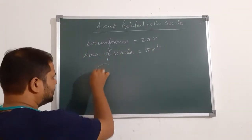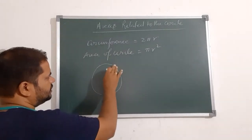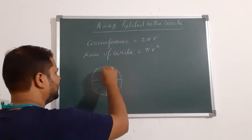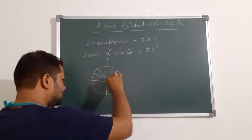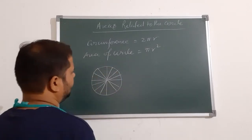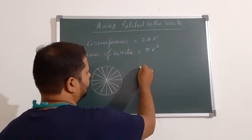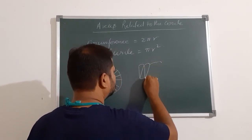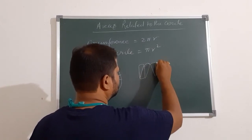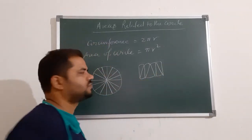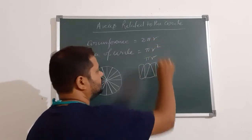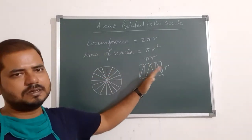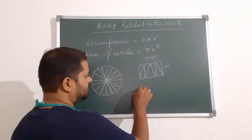So how to find the area of the circle. If we consider a circle with radius R, and point divided equal parts, we will have so many parts of this circle and cut each part and arrange like this.